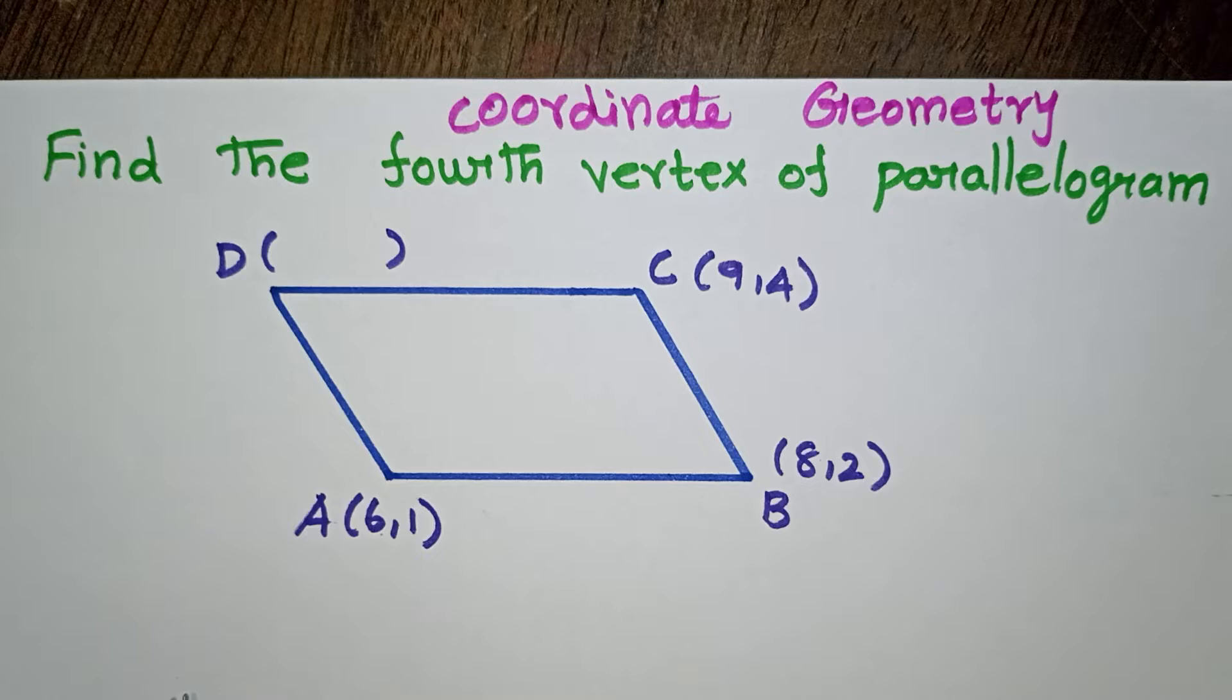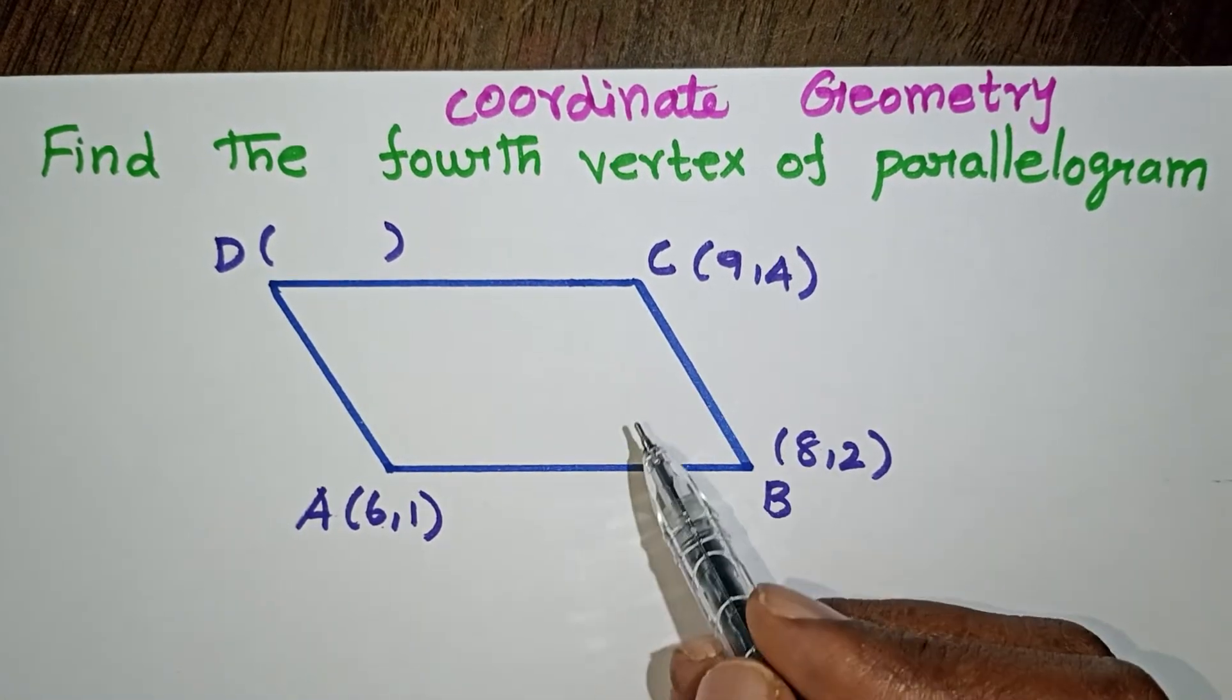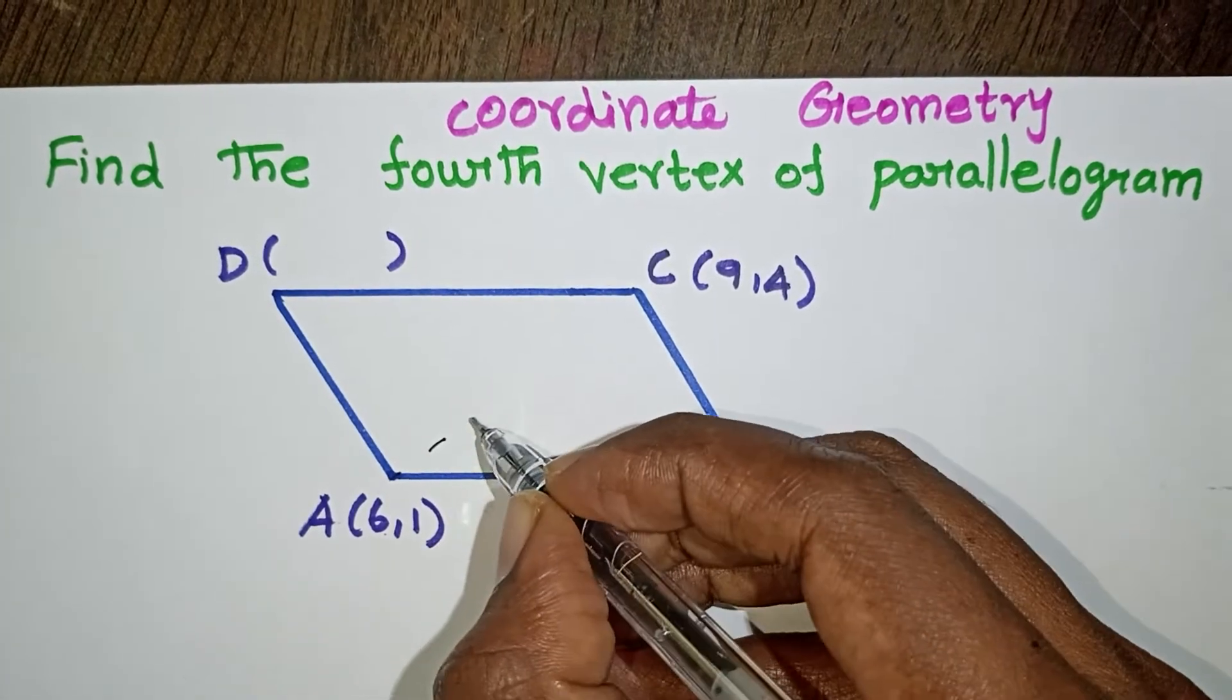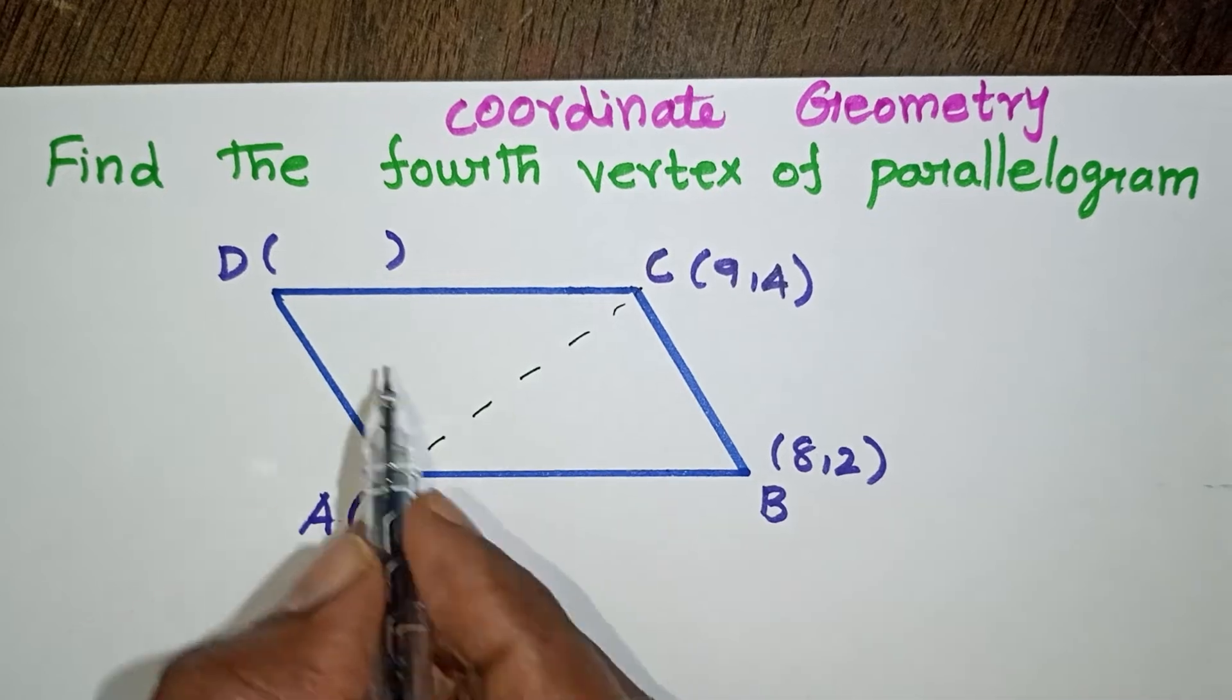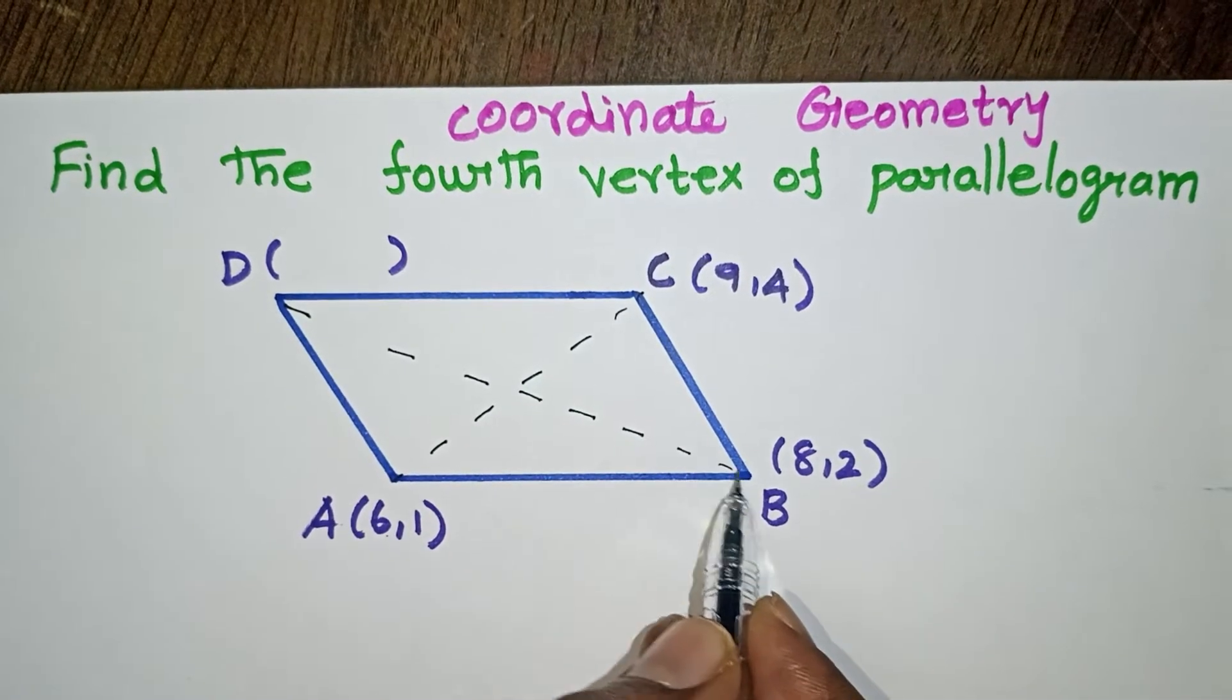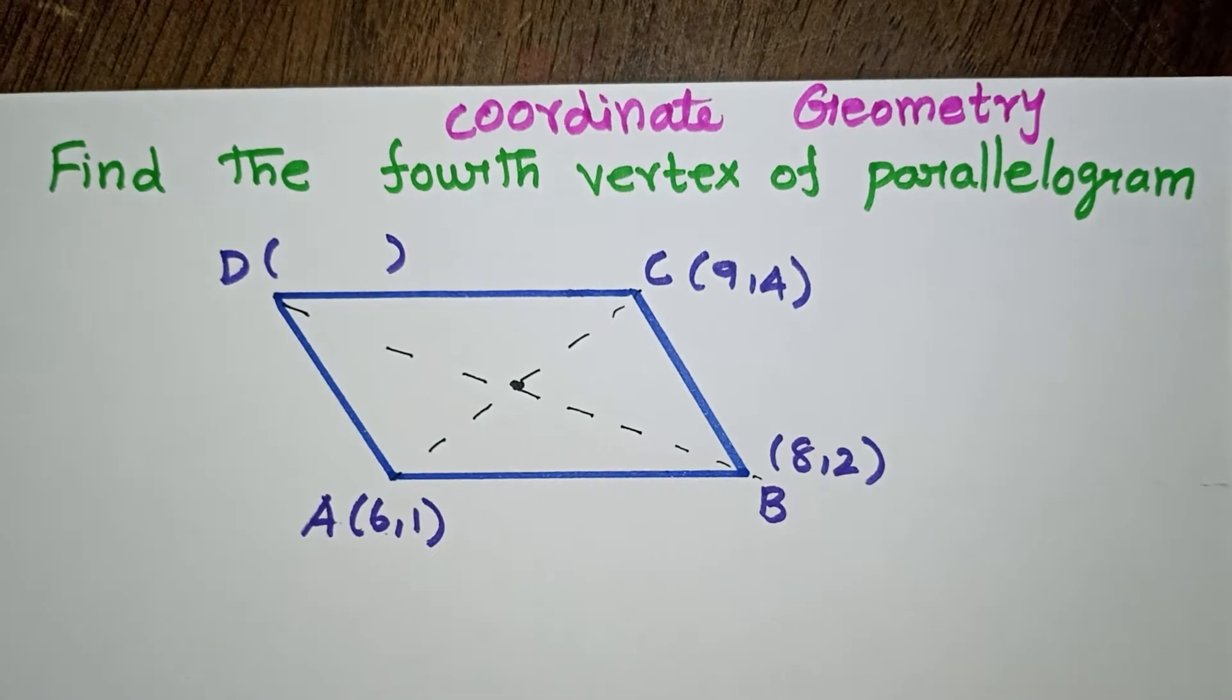The basic condition in a parallelogram is that diagonals bisect each other. This means the midpoint of diagonal AC will be equal to the midpoint of diagonal BD. That is called bisection.